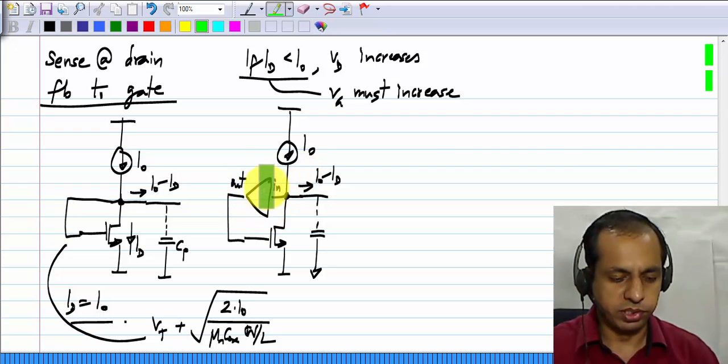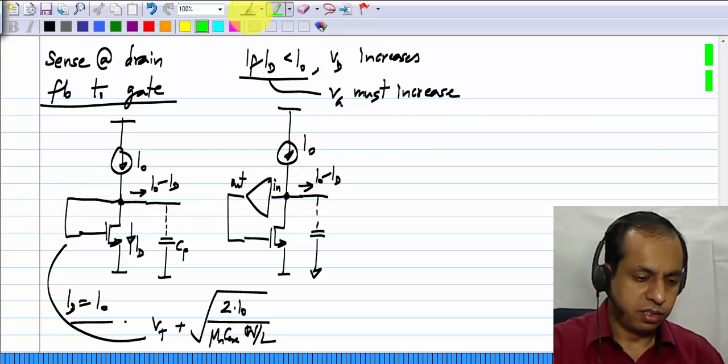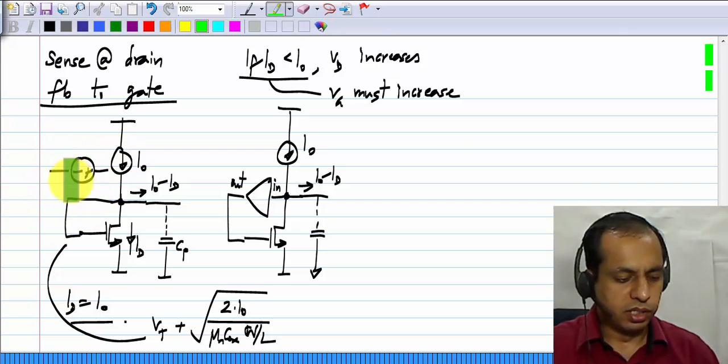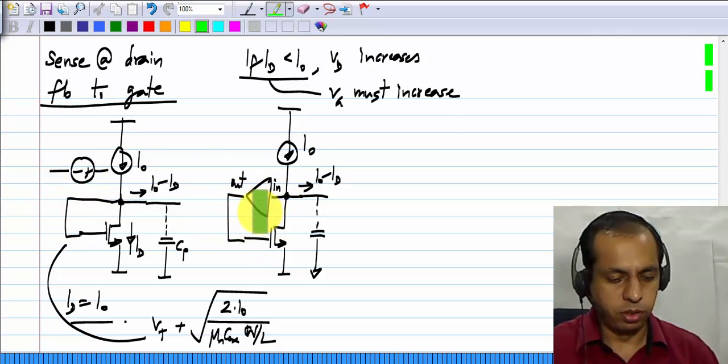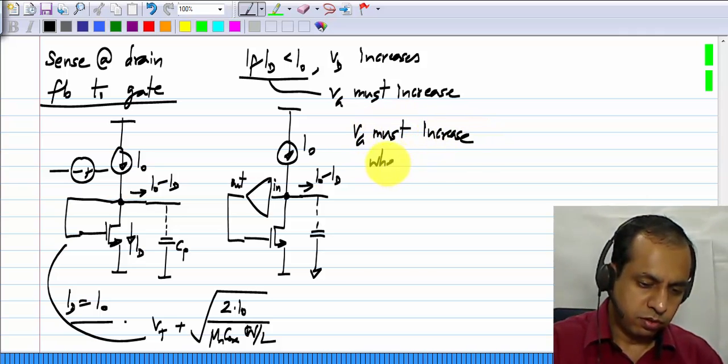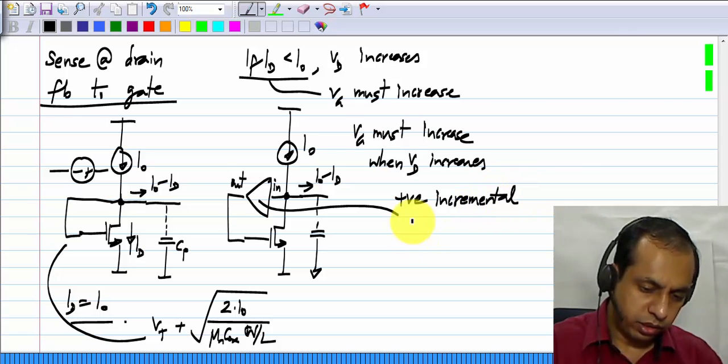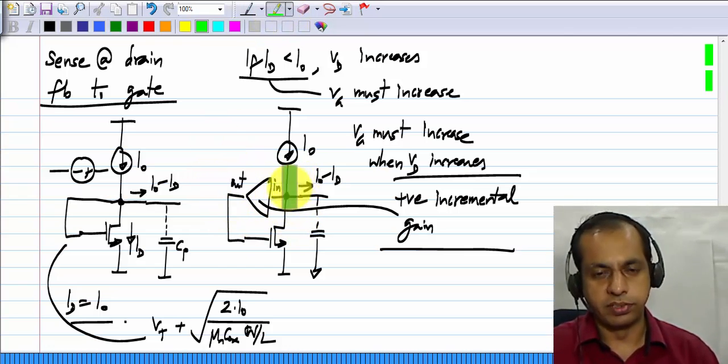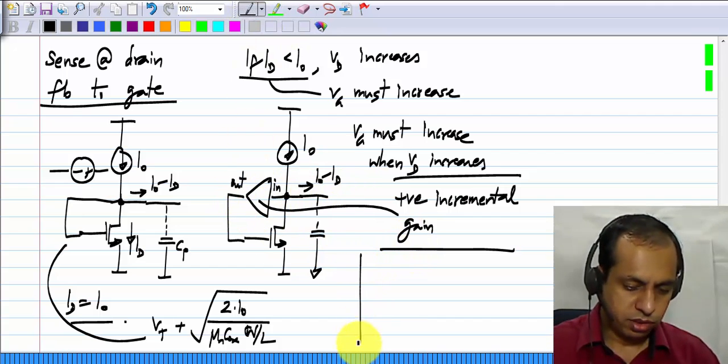In the assignment and activity questions, you have seen examples where this is not a direct connection like that, but you could have a fixed voltage drop in either direction. It does not matter because if this side increases, this voltage is fixed, that side also increases. It does not even have to be a simple voltage source like this. It could even be another amplifier or something. All we want is that the output voltage must increase when the input voltage increases. V g must increase when V d increases.